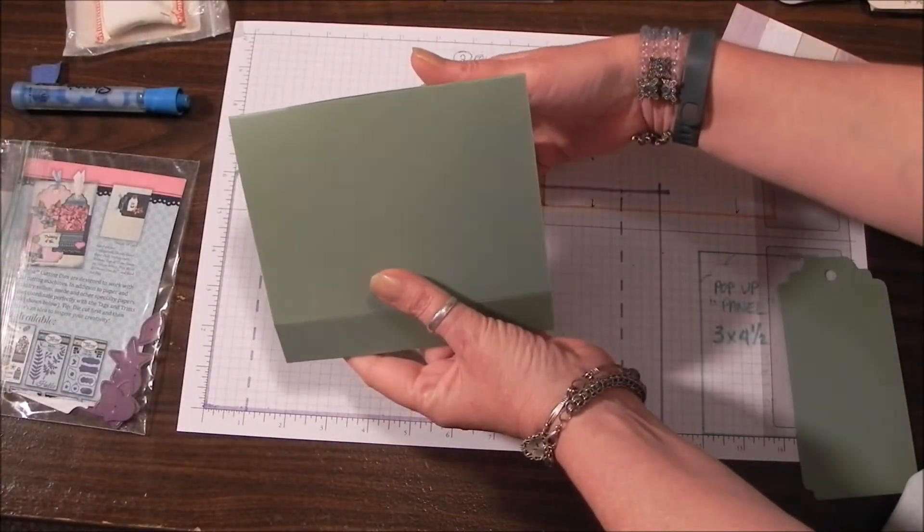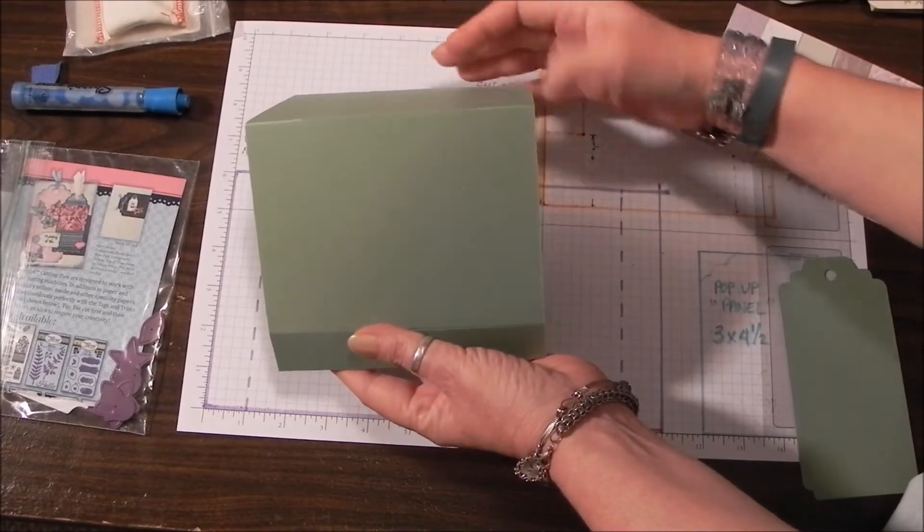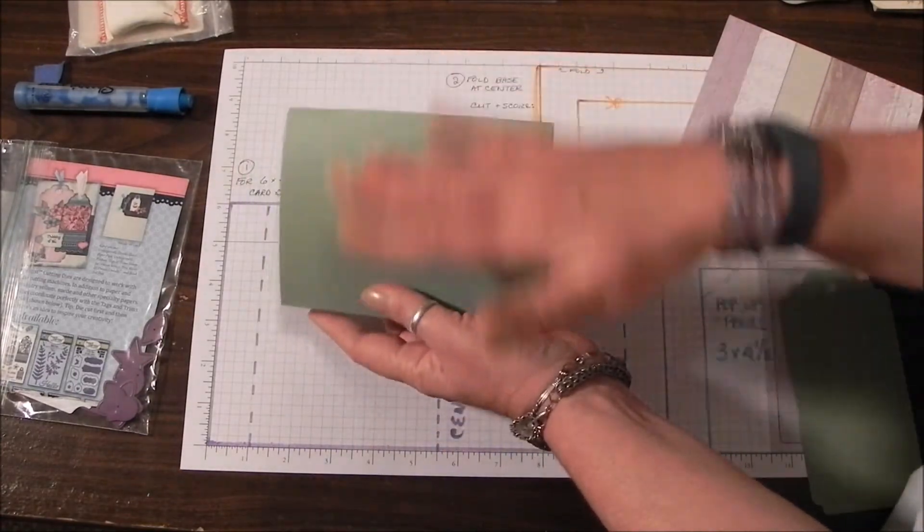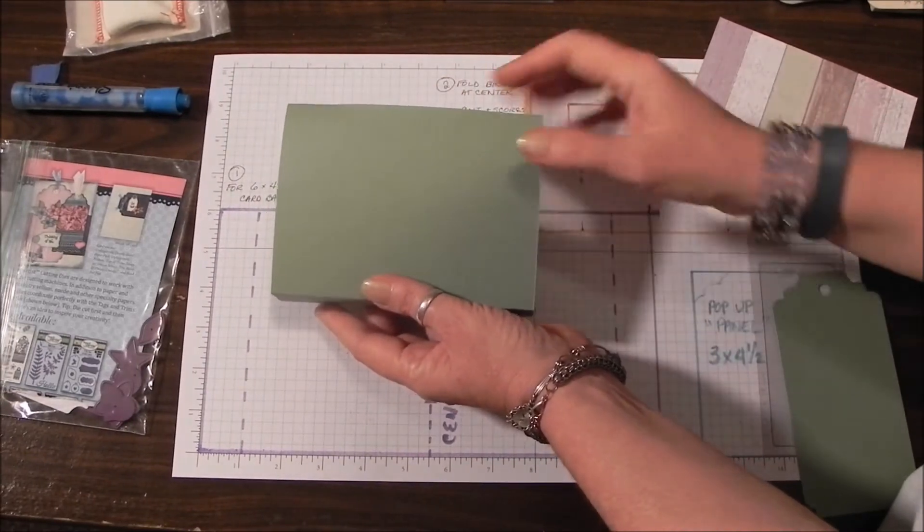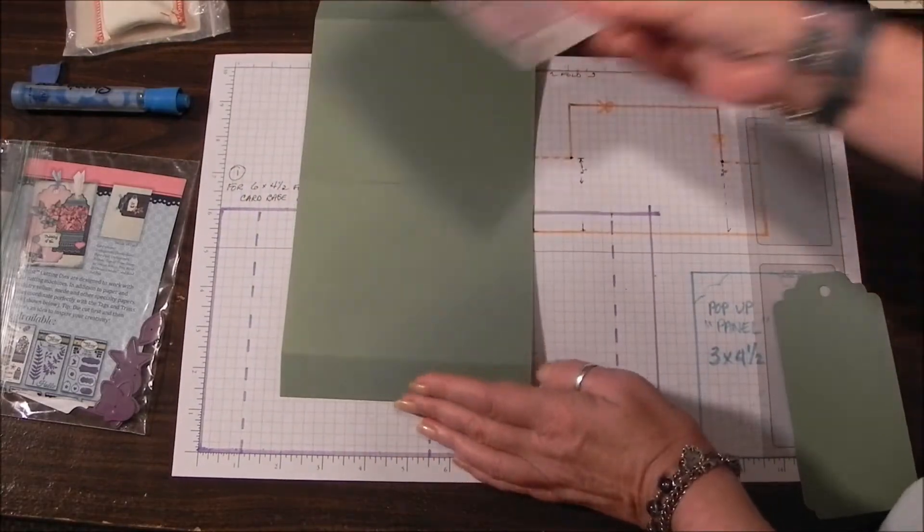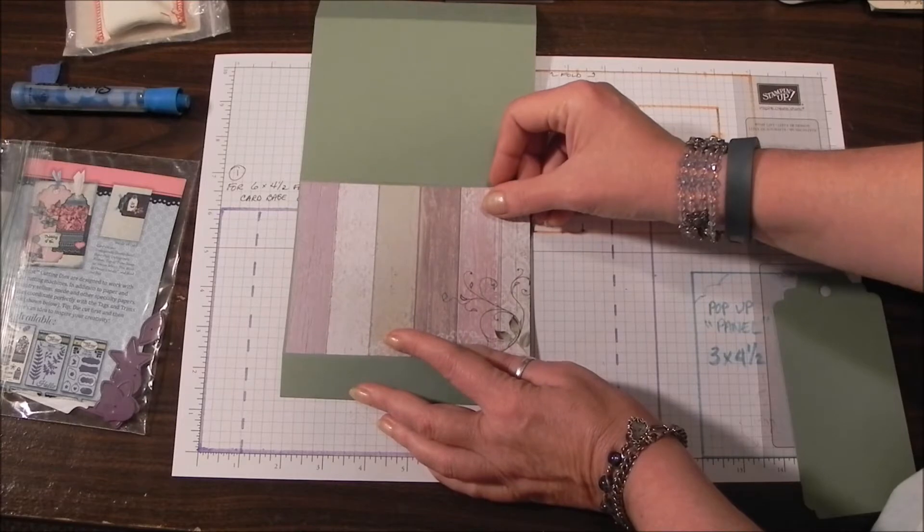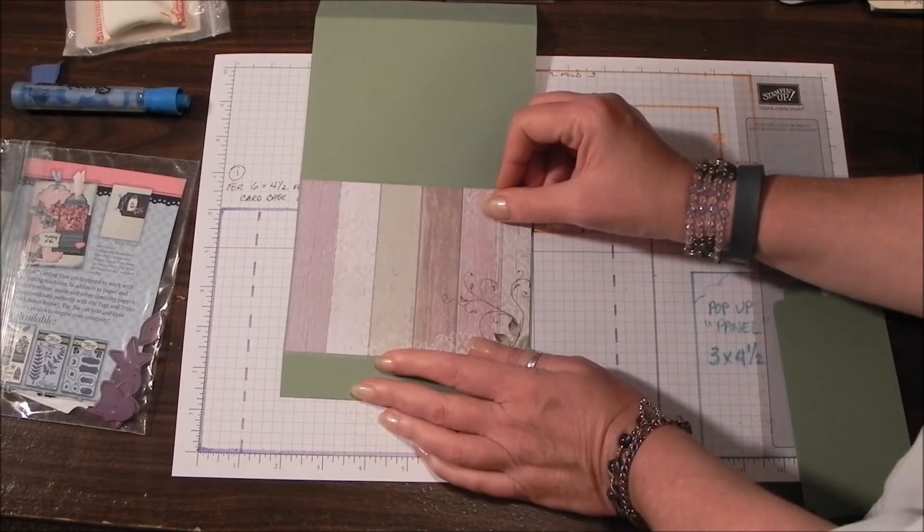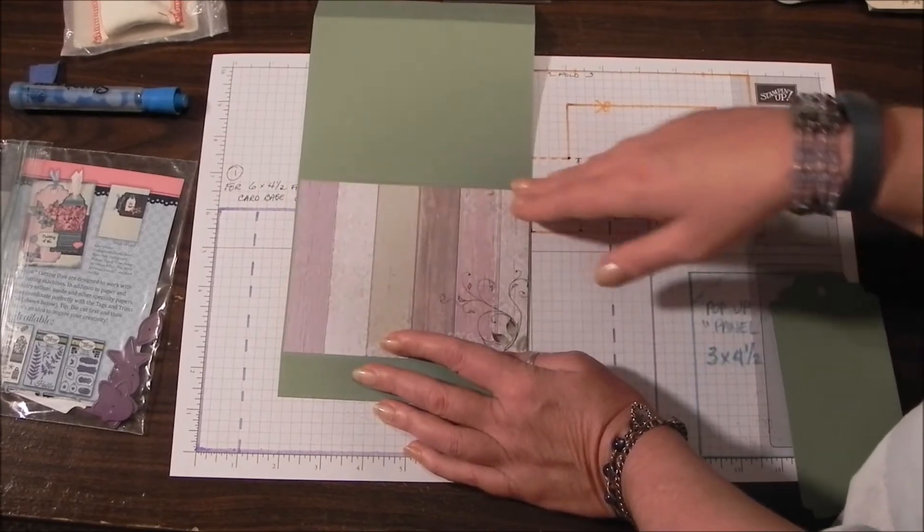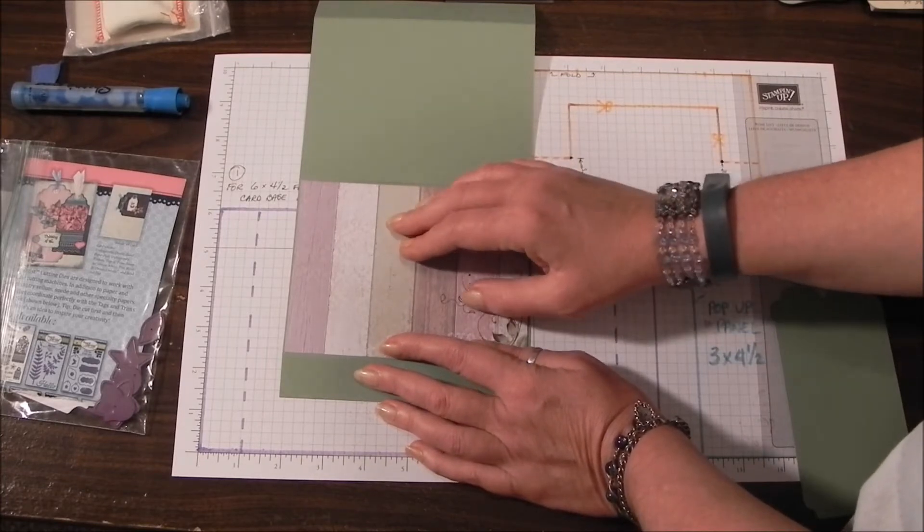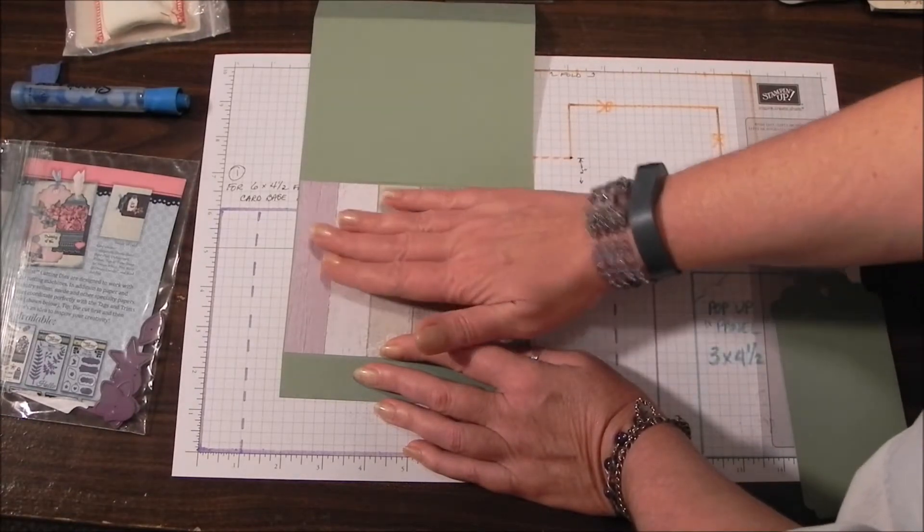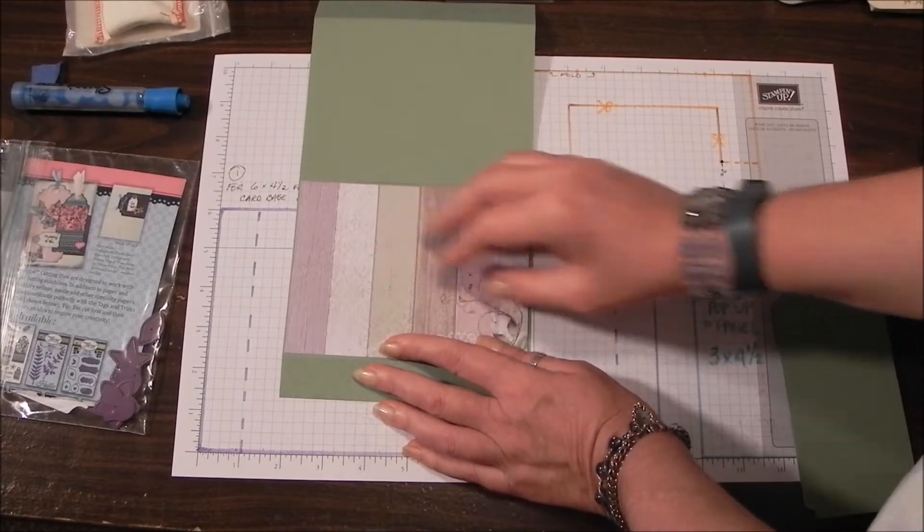Now you've got your base structure. I've got the slit in here for the pop-up to come through. Before I cut into the front of my card, what I want to do is panel it. I've got a piece of patterned paper cut one eighth short on all sides. It's four and three eighths tall by five and seven eighths. I'm going to use a glue stick to make sure everything's really flat on there.